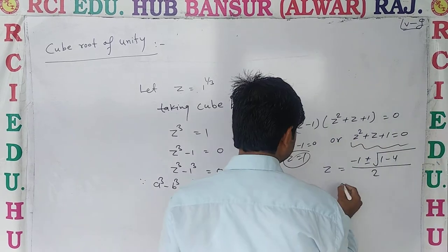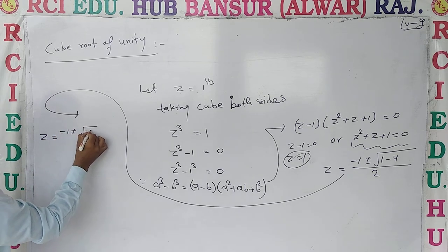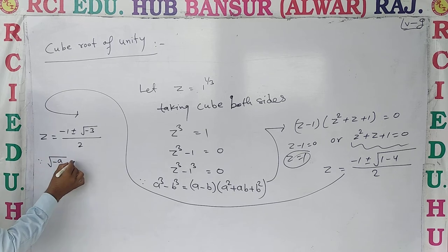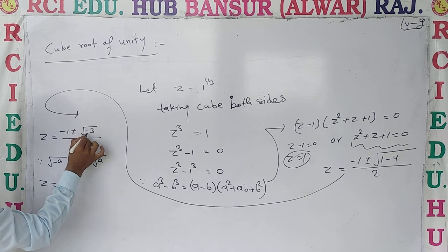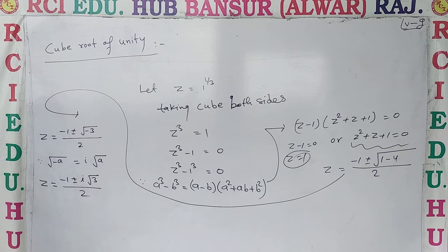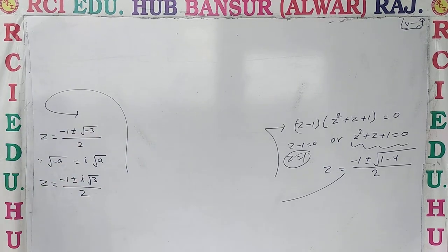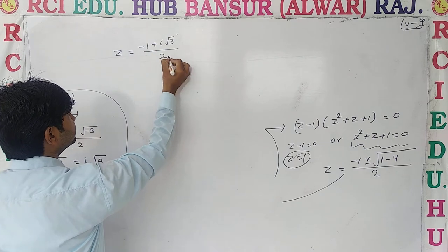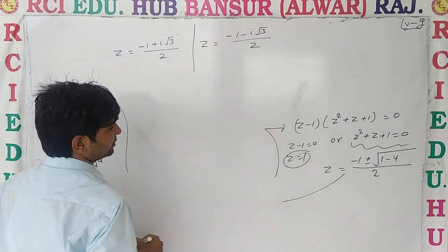So from here, pay attention — this is a very good concept. Z equal to minus one plus minus root of minus 3, upon 2. Since there is a minus inside the root, taking it out gives iota. So z equal to minus one plus minus iota root 3, upon 2. Thus z equal to minus one plus iota root three upon two.